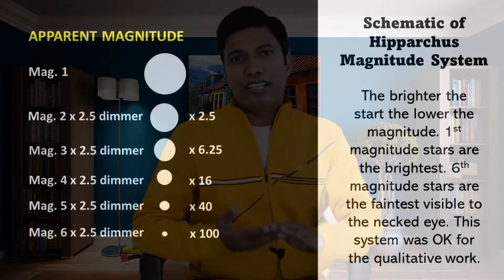And the stars in the first magnitude class are around 100 times brighter than the stars in the sixth magnitude class.